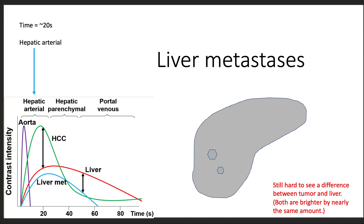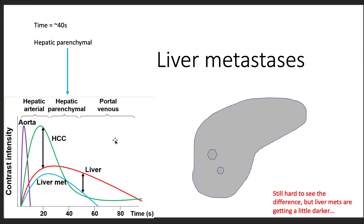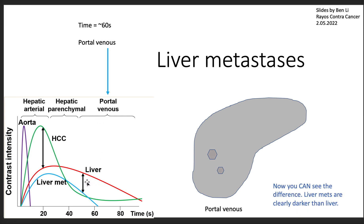Moving on, between the hepatic arterial phase and the venous phase, the liver metastases are starting to get darker, whereas the liver is staying bright. When we get to the portal venous phase, look at this difference: the liver metastases in the blue line is dark, and the liver is still relatively bright. Looking at the image, you can now distinguish the metastases compared to the liver — the liver metastases are clearly darker than the liver and you can see it.